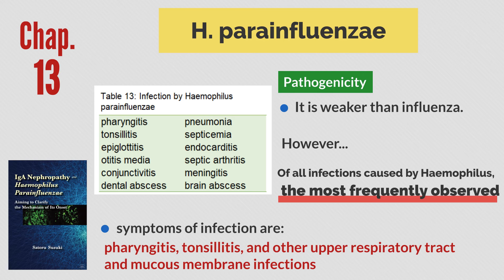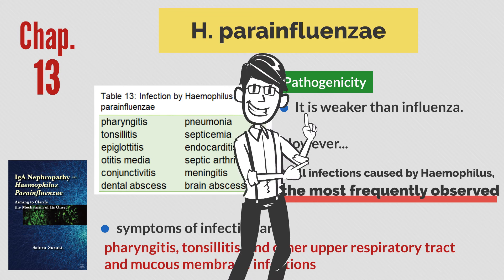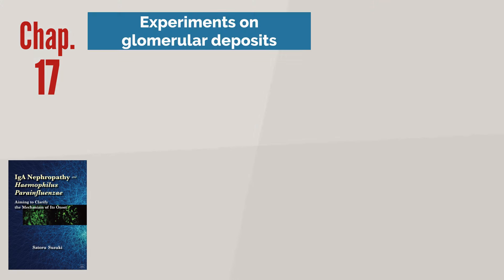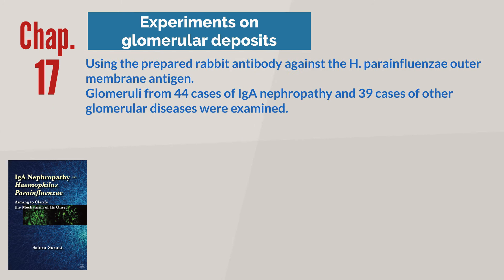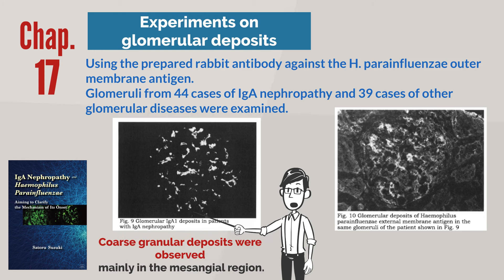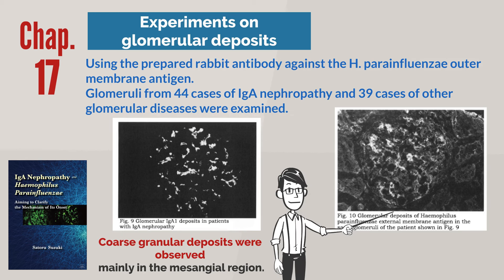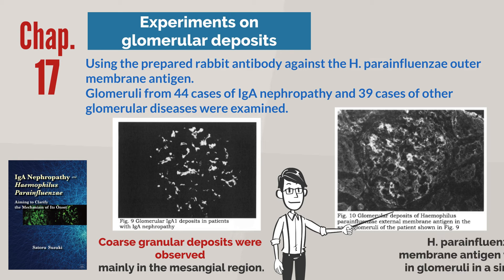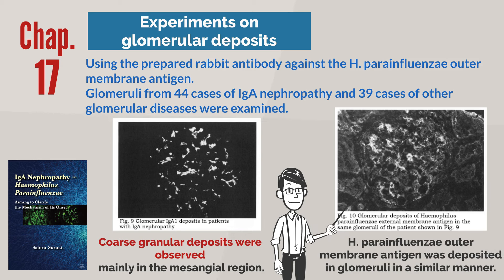The relationship between the two is somewhat clear now. Let's look at the details in Chapter 17, which covers an experiment on glomerular deposits. We examined the glomeruli of 44 cases of IgA nephropathy and 39 cases of other glomerular diseases using rabbit antibodies against the outer membrane antigen of H. para-influenzae. Figure 9 shows glomerular IgA deposits using monoclonal anti-IgA1 antibody in biopsied renal tissue from IgA nephropathy patients, showing coarse granular deposits of IgA1, mainly in the mesangial region. Figure 10 shows findings using rabbit anti-H. para-influenzae antibody in the same glomeruli — the mode of glomerular deposits of IgA1 and H. para-influenzae outer membrane antigen were similar.